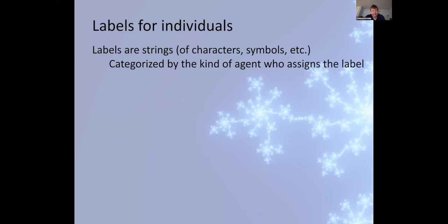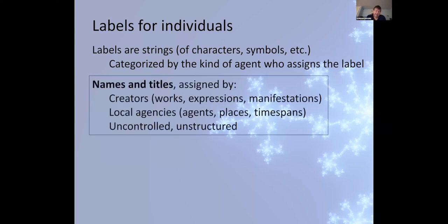Labels for individuals are strings. A string is just a sequence of characters, numbers, alphabetic characters, ideographs. They can even be symbols, as with the famous case of the artist formerly known as Prince. And indeed, they can be oral symbols. That is, a label can be something that is spoken. And as I said, labels are very much determined by local culture and can be categorized by the kind of agent who assigns the label.